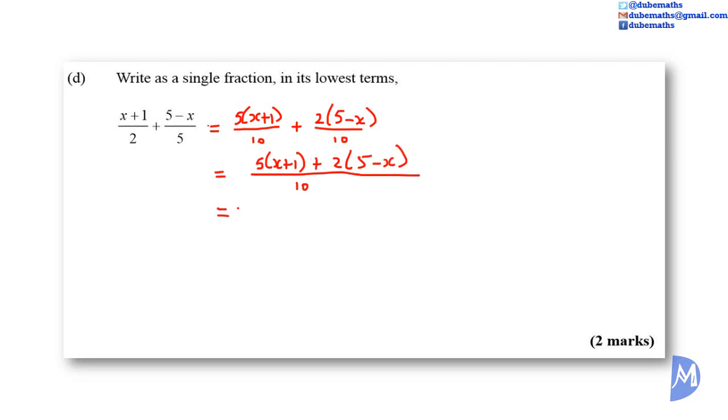We have 5 multiplied by X plus 1 added to 2 multiplied by 5 minus X. Expanding brackets. 5 multiplied by X is 5X. 5 multiplied by 1 is 5. Positive 2 multiplied by 5 is positive 10. And positive 2 multiplied by negative X is negative 2X. All over 10. 5X minus 2X is equal to 3X. And 5 plus 10 is equal to 15. And the numerator can be factorized further. The HCF is 3. Enter X plus 5 over 10.